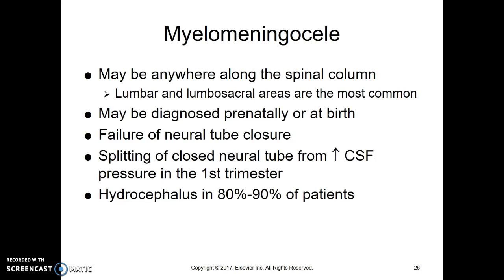The defect comes from the neural tube not closing properly in utero, just weeks after conception. Whether increased pressure prevents closure or incomplete closure causes abnormal fluid pressure is uncertain — it doesn't really matter. In 80 to 90% of these babies, they have hydrocephalus and will need that treated — that's extra CSF inside the brain.